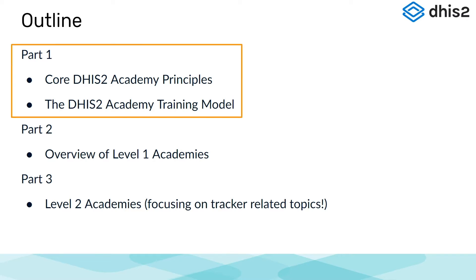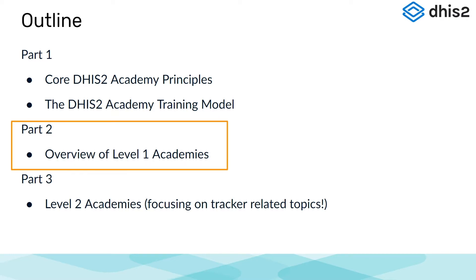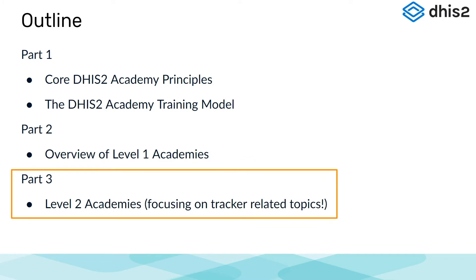In Part 1, we will start by discussing the core DHIS2 Academy principles as well as the training model we are currently utilizing. In Part 2, we will focus on reviewing Level 1 Academies — the next natural set of courses to consider if you have only completed the Fundamentals courses. Lastly, in Part 3, we will discuss two of the Level 2 Academies that we have on offer, in particular those most closely related to using Events and Tracker.